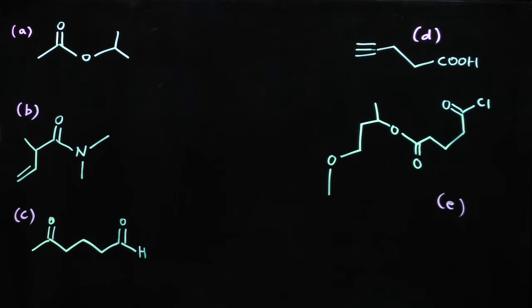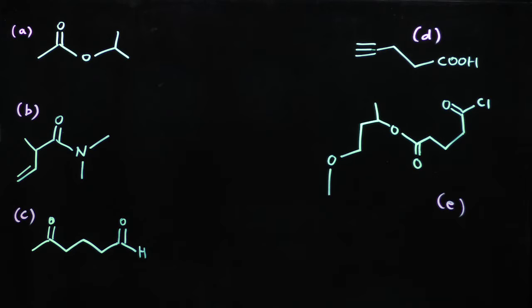You see there are five molecules on the screen here: A, B, C, D, E. The objective is to find out what functional groups are present in each of these molecules and list them down. The second objective is to find out the molecular formula for each molecule.